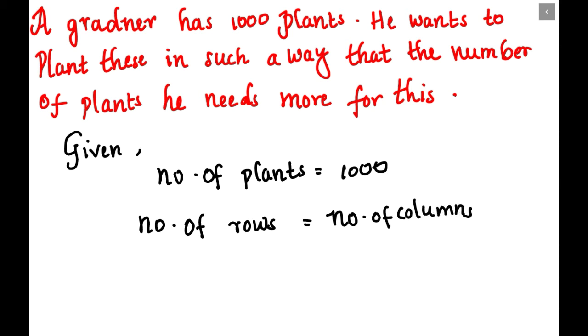There are rows and columns in which the gardener plants his plants. The numbers are unequal. He needs some more plants to make them equal.